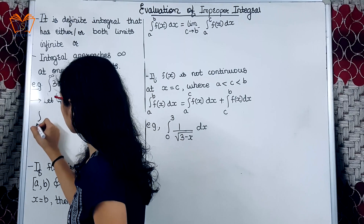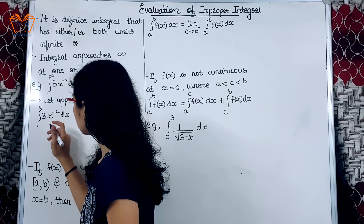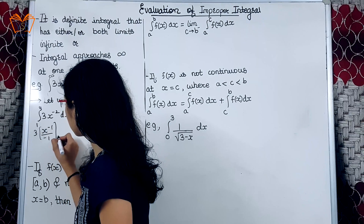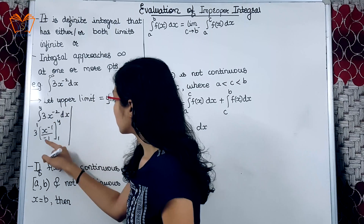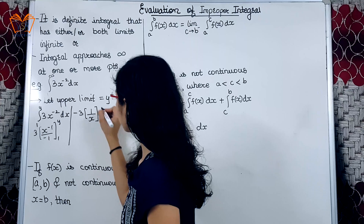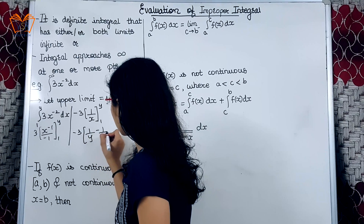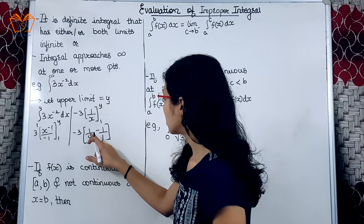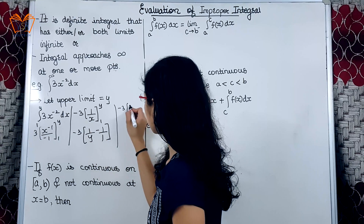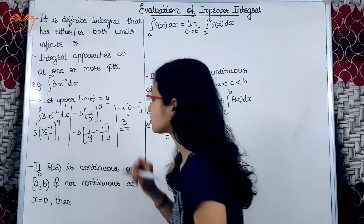We substitute this to get: integration from 1 to y of 3 times x raised to minus 2 dx. Integration of 3x raised to minus 2 gives 3x raised to minus 1 divided by minus 1, with limits 1 to y. This simplifies to minus 3 times 1/x, limits 1 to y. Substituting the limits: upper limit gives 1/y, lower limit x equals 1 gives 1. Since y is infinity, 1 divided by infinity is 0. So we get minus 3 times (0 minus 1), which equals 3.